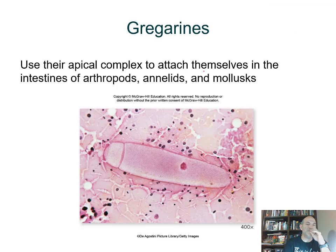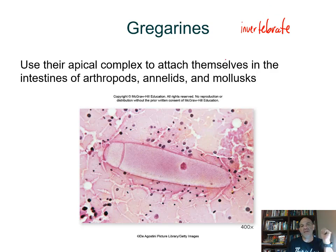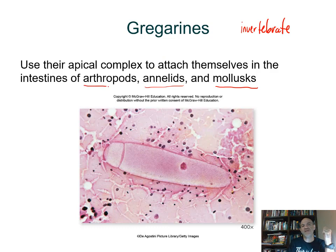This parasite can also cross the placenta and get into a human fetus. The fetus doesn't have a well-developed immune system, so this can cause the fetus to die from infection. Cats can be a host for this parasite. The parasite comes out in their feces, and if you don't wash your hands well after cleaning a litter box and then eat something, you can get it. Doctors typically ask expecting mothers if they have a cat and warn them about this situation.